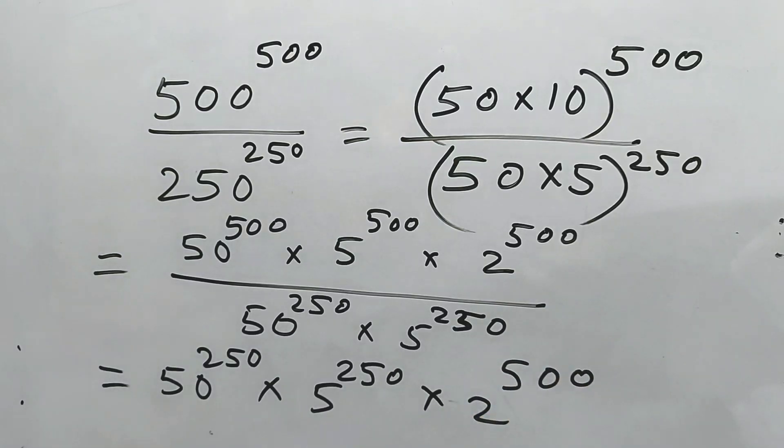Now, the interesting part is the powers are not the same, but we can make them the same. How? 500 is 250 times 2, and 250 times 2 means we can take this 2 inside. Let's do it here.